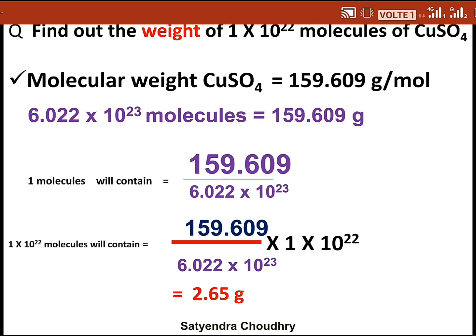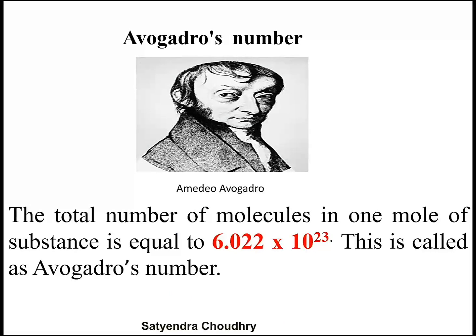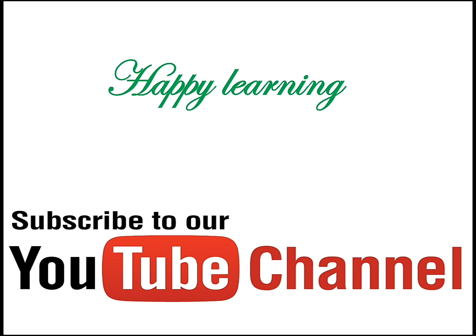Next is Avogadro's number. Before this number, we were unable to find out the total amount of molecules present in a solution or a given sample. This number helps us calculate the molecules or atoms present in a given sample. The total number of molecules in one mole of substance is equal to 6.022 × 10²³. Both concepts should now be clear.